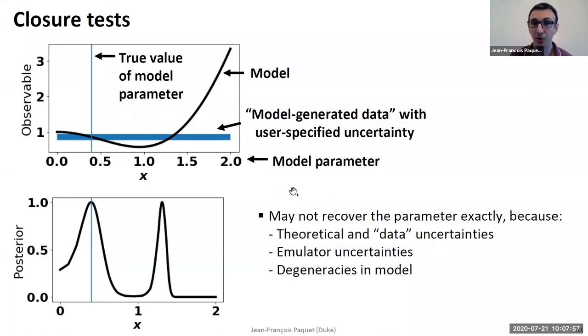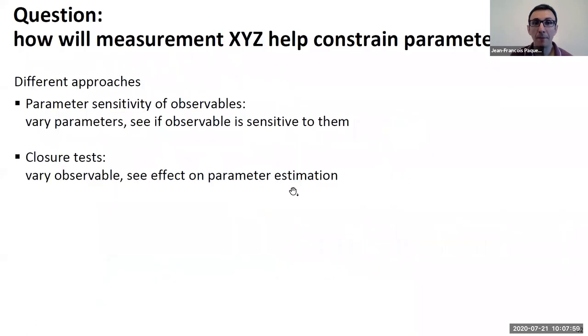So again, I think it's a versatile tool that can be used. It can really help you, and it's complementary to other approaches. So you can vary the parameter and see what effect it has on the observables, which is the first thing to try. And this is, in a sense, a forward problem. It's straightforward to do.